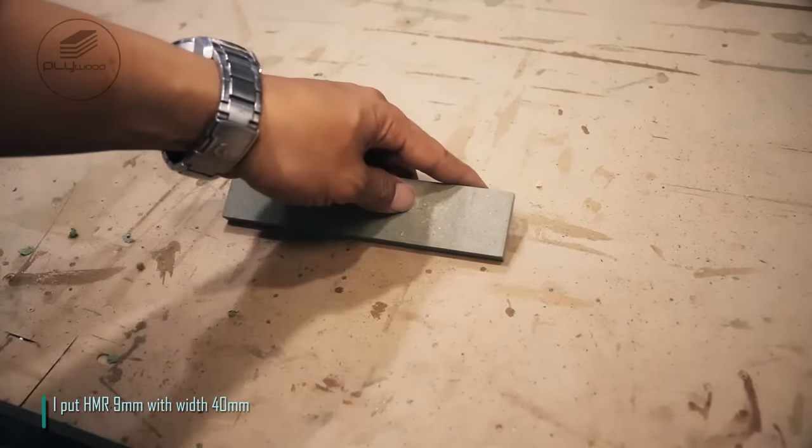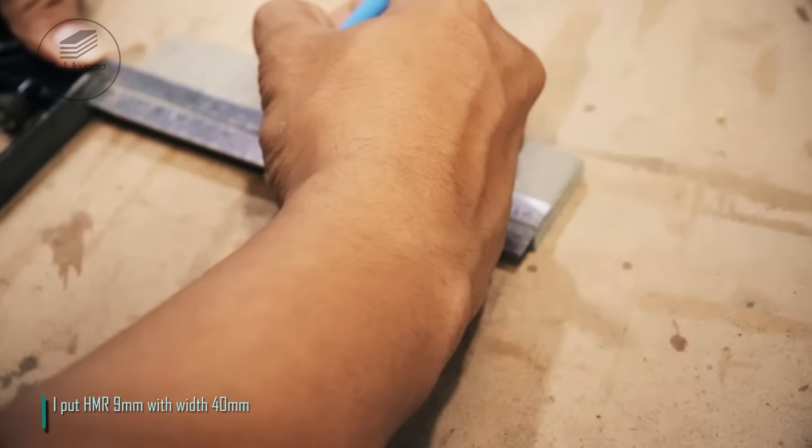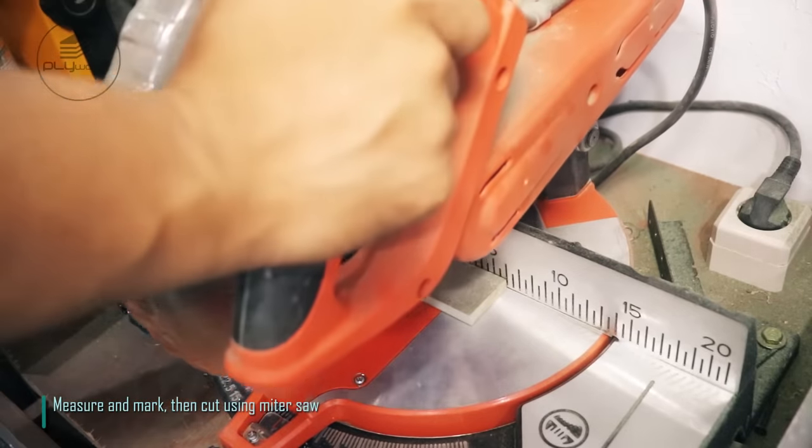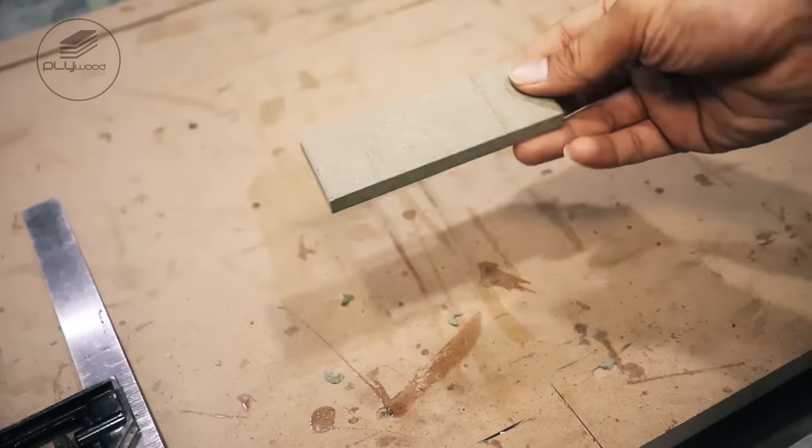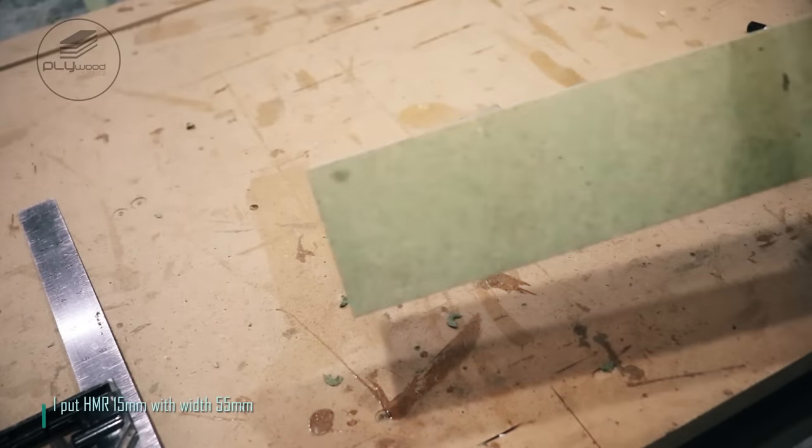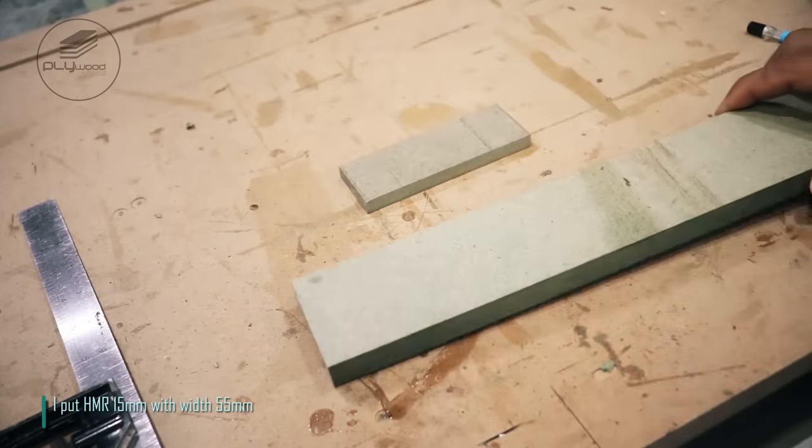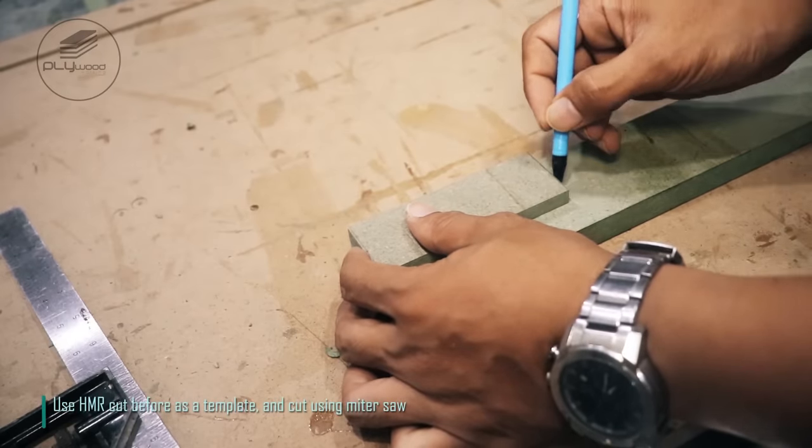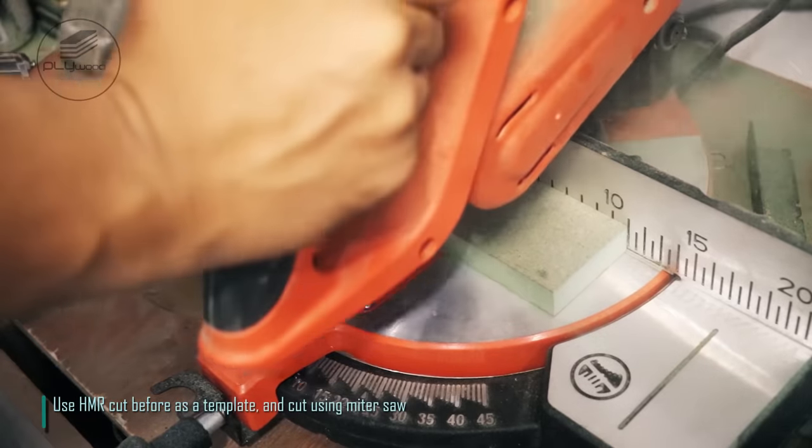I put HMR 9mm with width 40mm. Measure and mark, then cut using miter saw. I put HMR 15mm with width 55mm. Use HMR cut before as a template, and cut using miter saw.